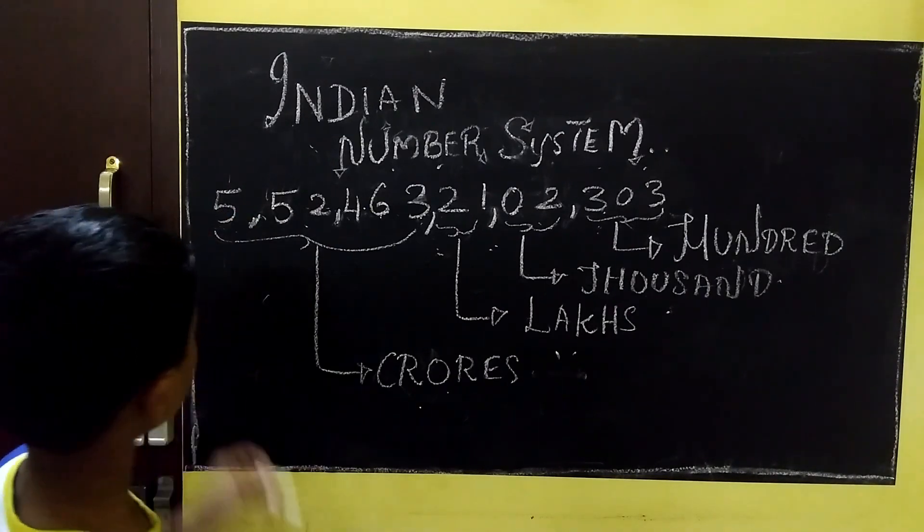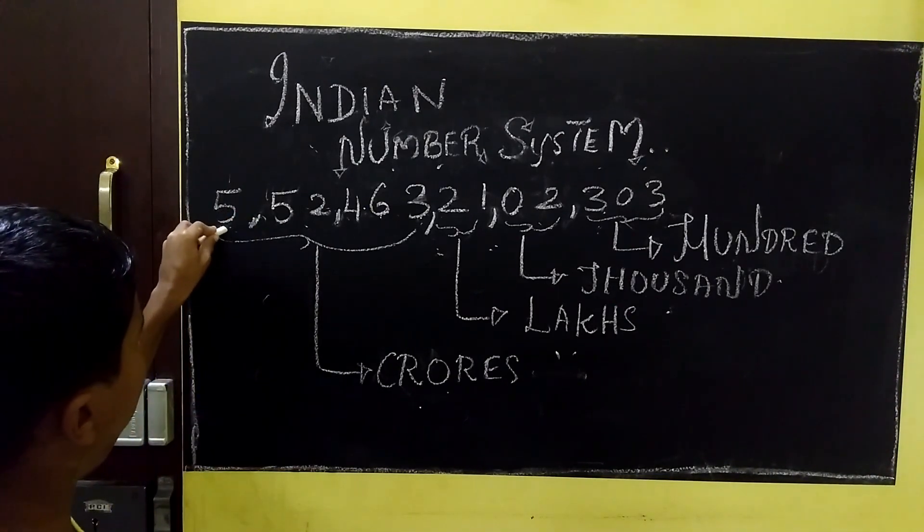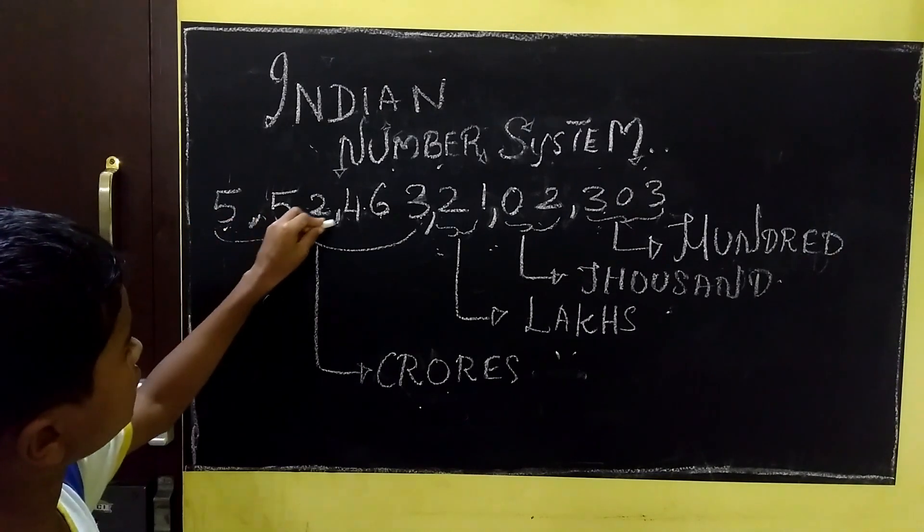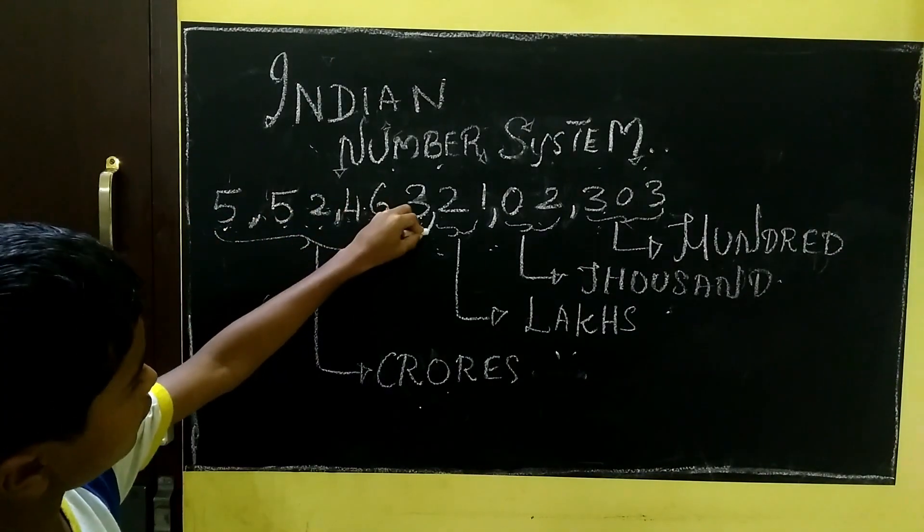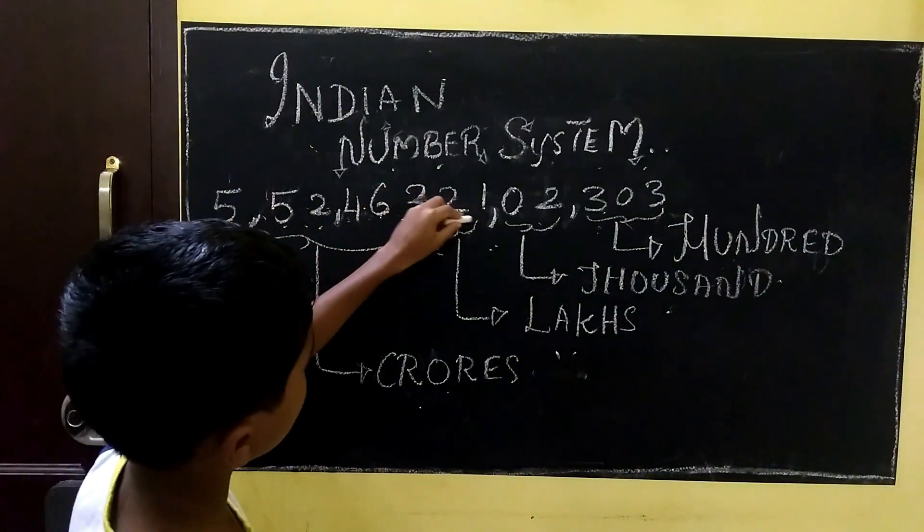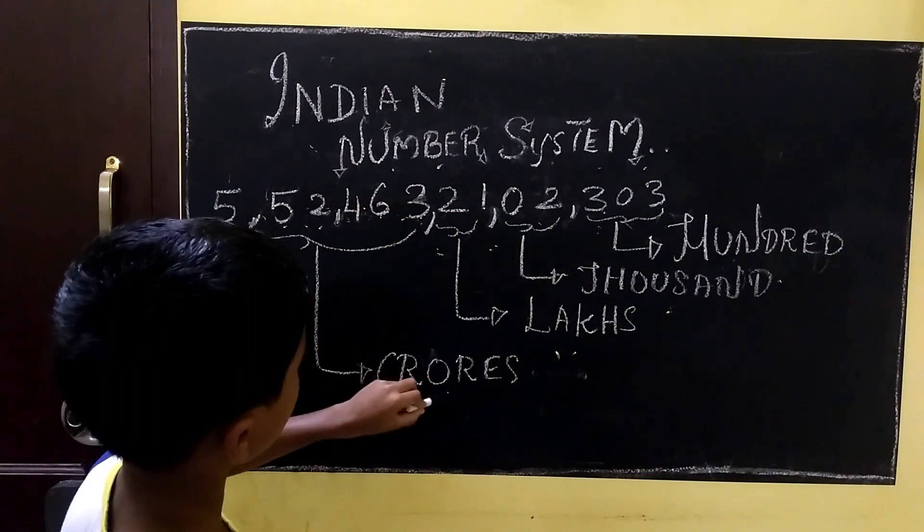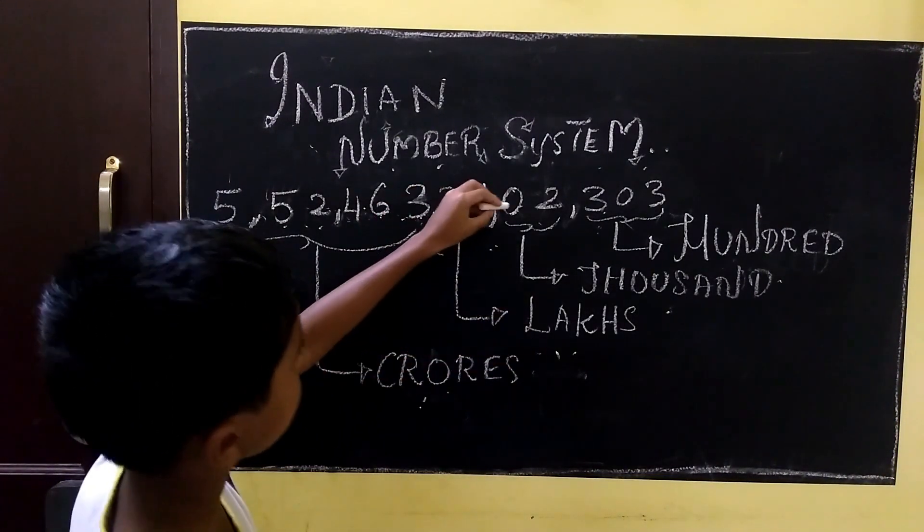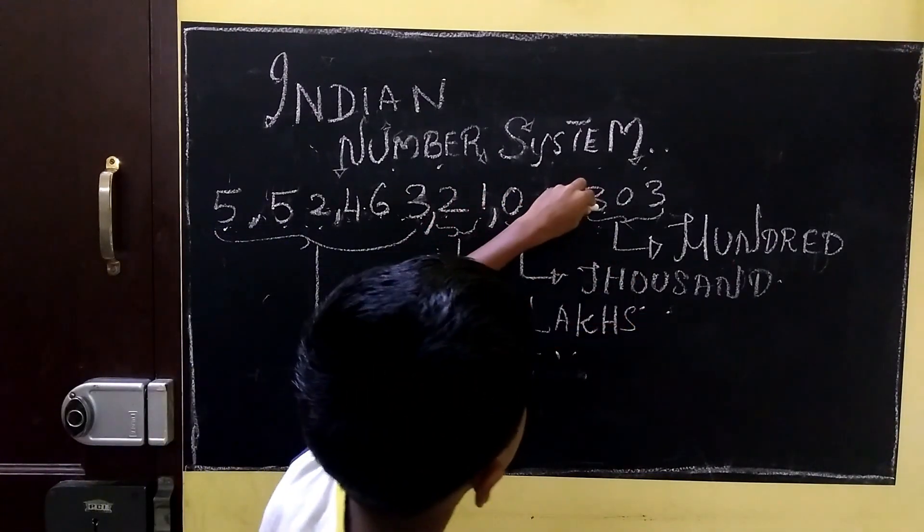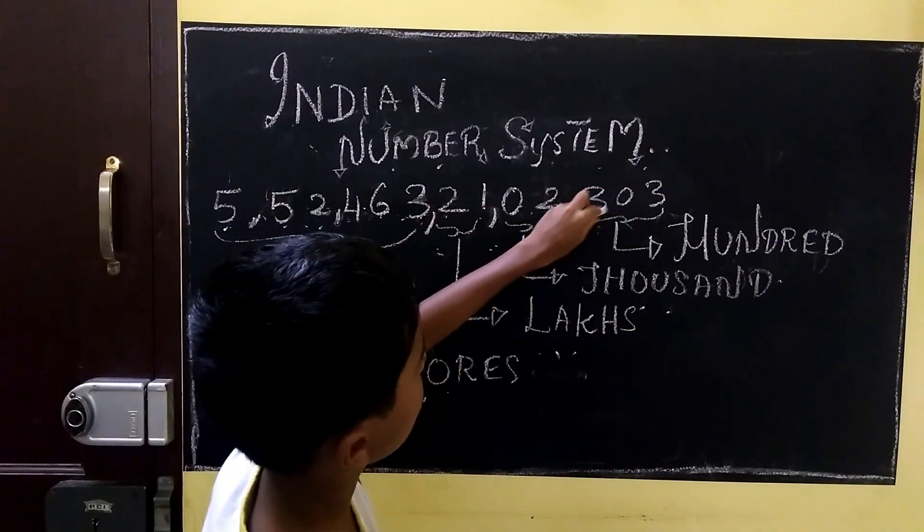Now, we are going to read this as 5 lakhs, 52,463 crores, 21 lakhs, 2,303.